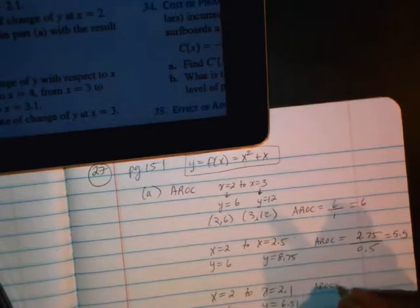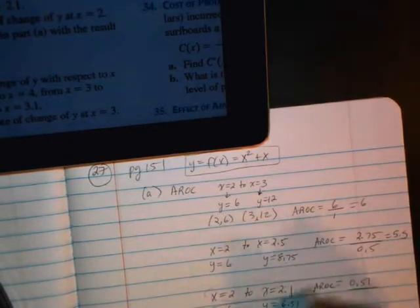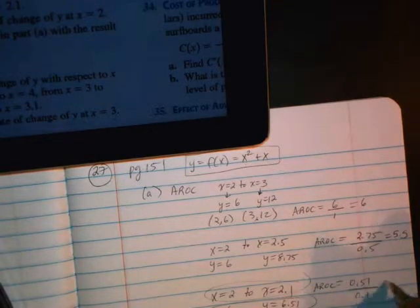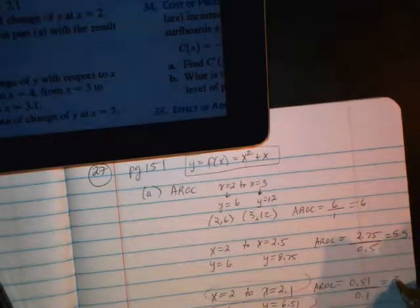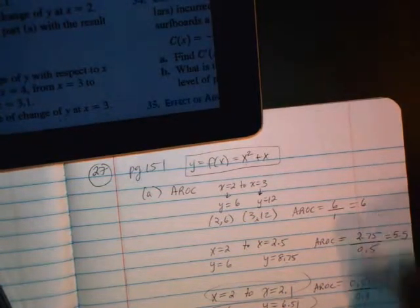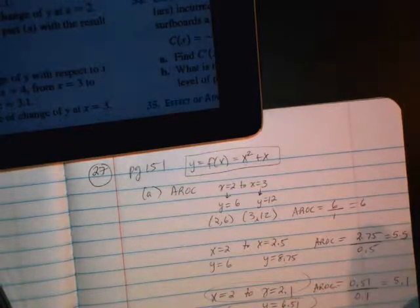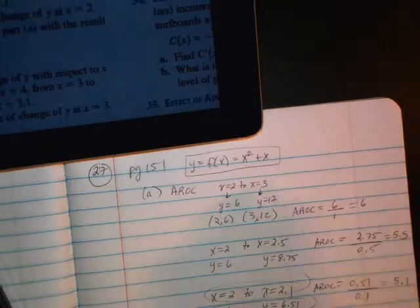So average rate of change, subtract the y's, you get .51, subtract the x's, you get .1, and when you divide, you just get 5.1. So you can get closer and closer to 2, and you'll see what happens. The pattern will give you a little clue as to what your average rate of change is approaching.